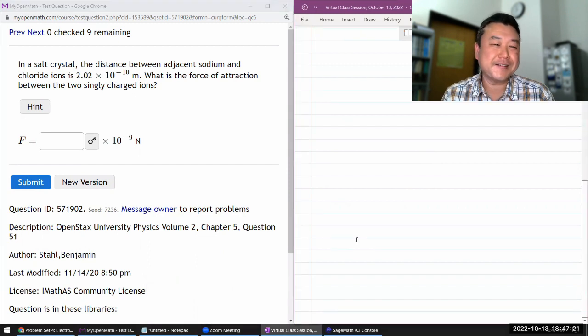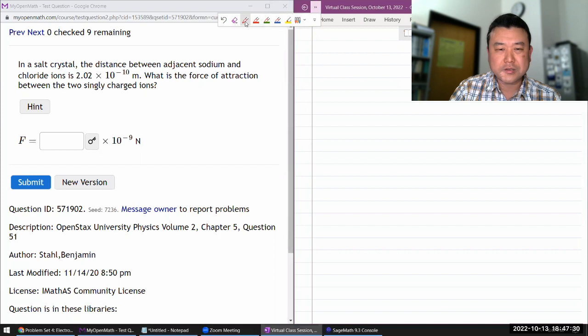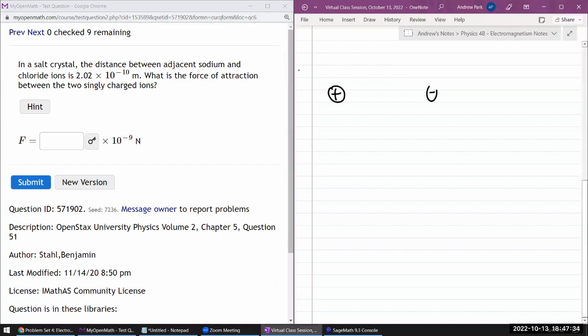The question says in a salt crystal, the distance between adjacent sodium and chloride ions. Let me start doodling. It looks like it's describing some interaction between two charges, and they've given us the distance. It says, what is the force of attraction between two singly charged ions? Sodium tends to lose electrons. I guess this positive charge must be the sodium ion, and this must be the chloride ion. They are singly charged, meaning we actually know how much charge these have. This charge is plus E. This charge 2 is minus E.